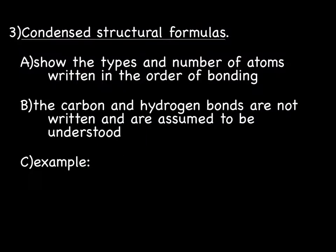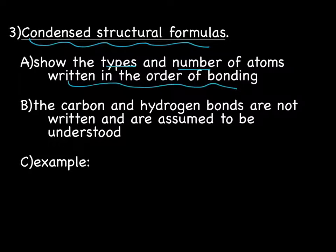And the third type of formula is the condensed structural formula. The condensed structural formula is kind of in between the complete structural formula and just the molecular formula. It does show the types and numbers of atoms, and it's written in the order of bonding. But the actual bonds themselves are not written.